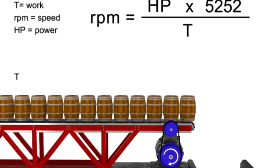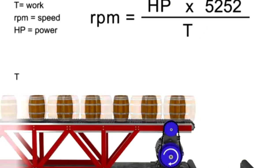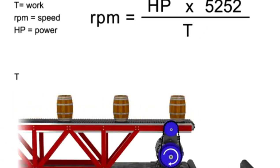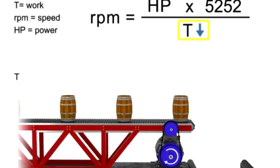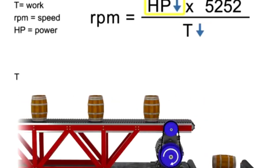Similarly, the opposite is true. If we wish speed to remain constant and decrease torque, then horsepower also decreases.